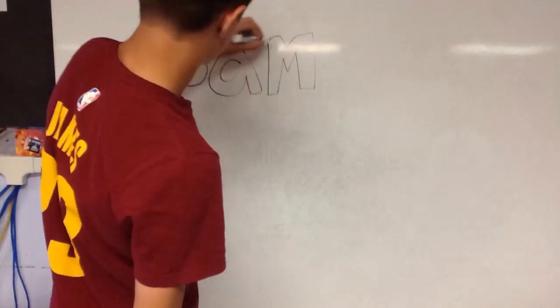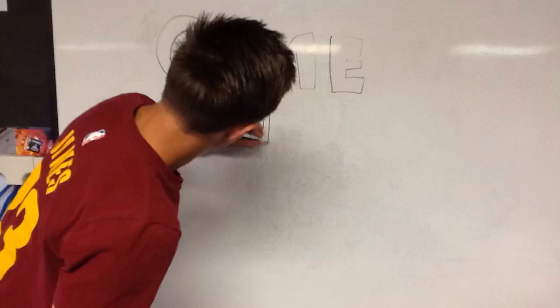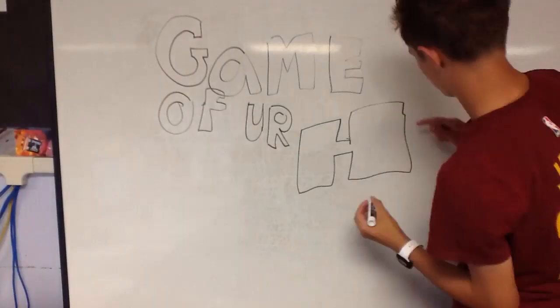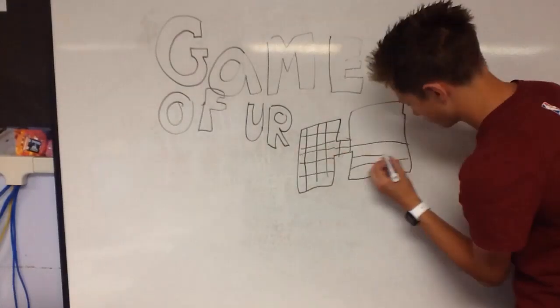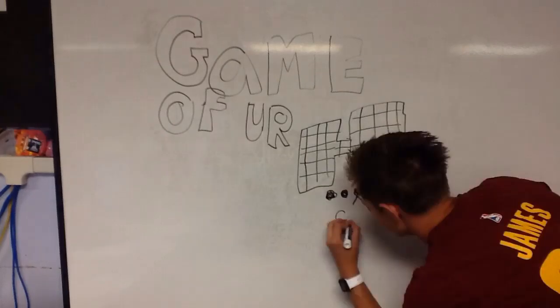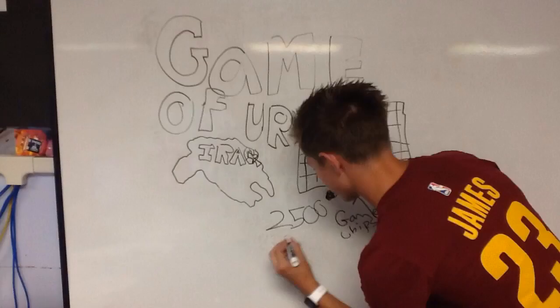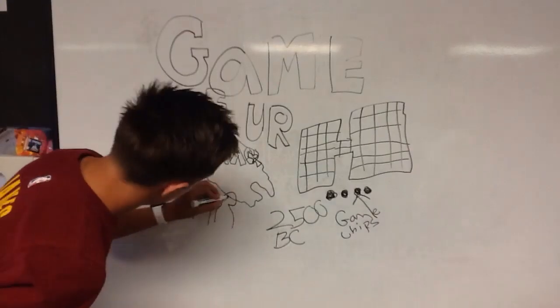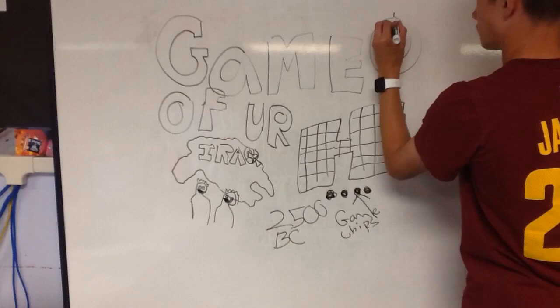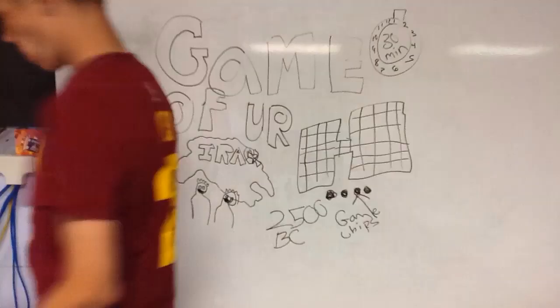The Royal Game of Ur. The Royal Game of Ur was played on a board using game chips. It was made in Iraq or present-day Mesopotamia. It was made in the year 2500 B.C., and it is a multiplayer game, and you can play it for up to 30 minutes.